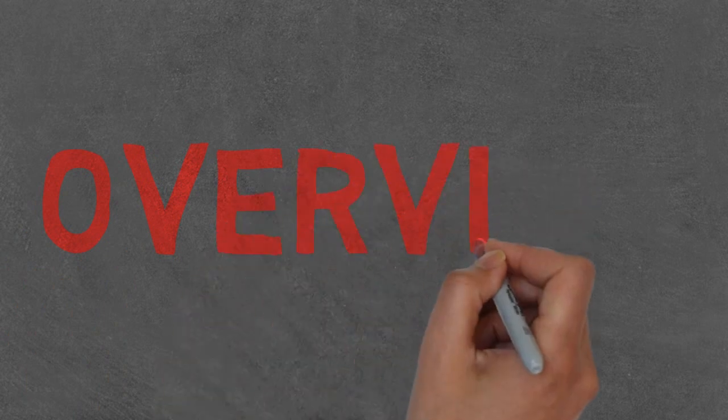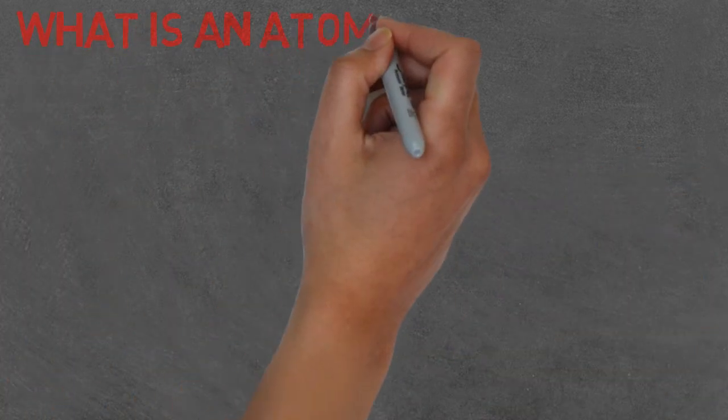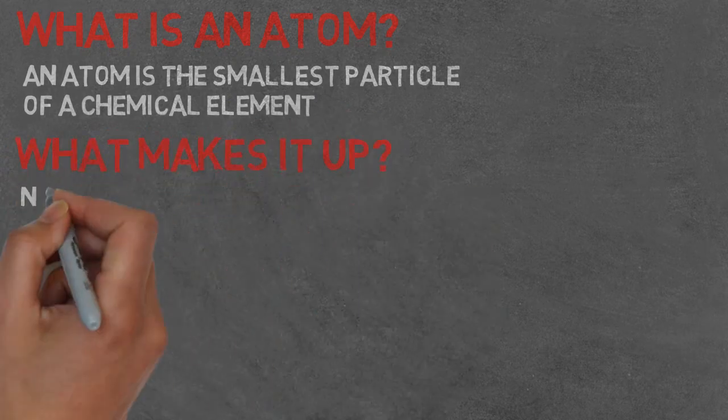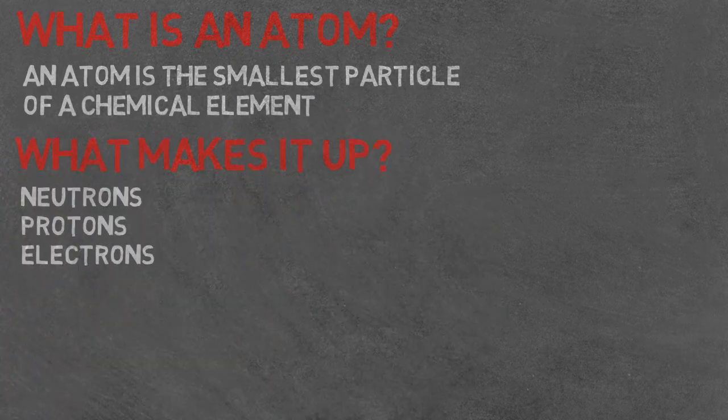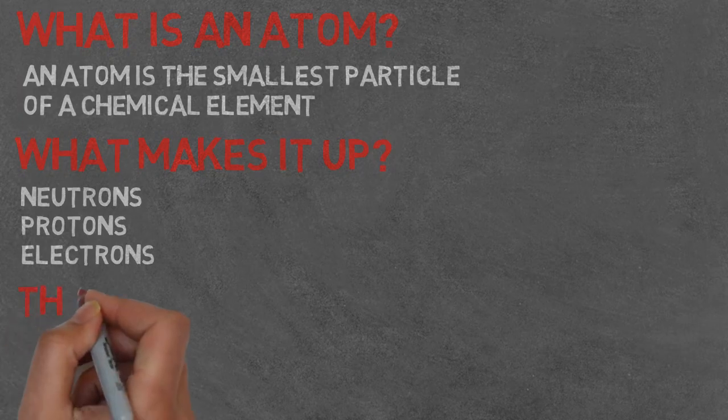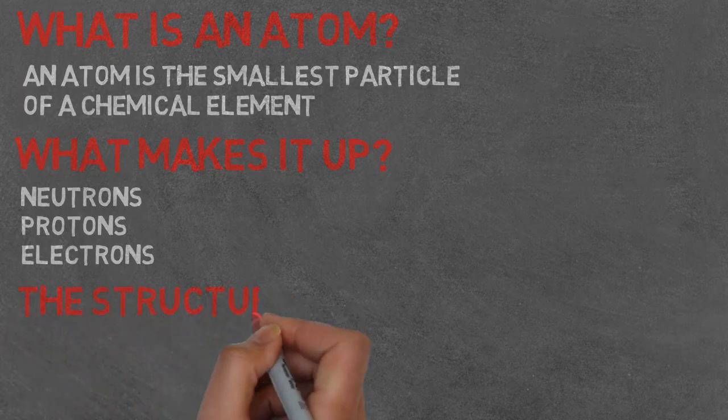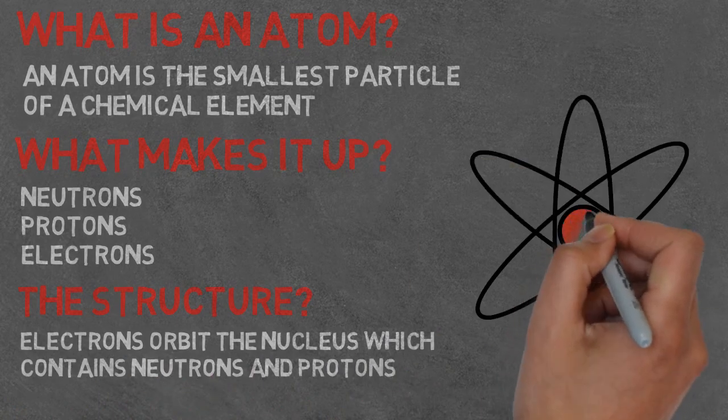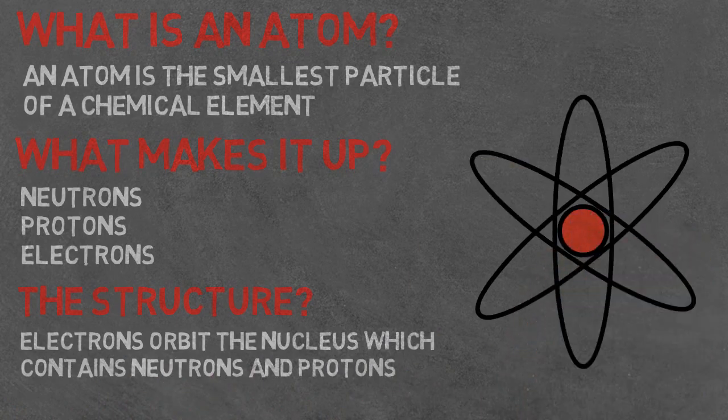An overview to make sure you are all listening. An atom is the smallest particle of a chemical element. It is made up of three smaller particles called neutrons, protons and electrons. These form the atom's structure. In the structure, the electrons orbit around the centre of the atom, known as the nucleus, which contains the neutrons and protons.